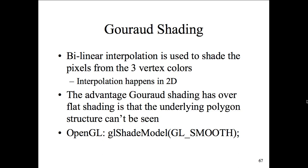The advantage of Gouraud shading over flat shading is that the underlying polygon structure can't be seen — in flat shading you can see the vertices and the lines between polygons. With Gouraud shading it's smooth or blended. OpenGL uses the word 'smooth' to describe it: you can't see the transition between polygons, but they transition from lighter to darker. In OpenGL we use gl_shade_model with GL_SMOOTH to apply smooth shading between polygons.